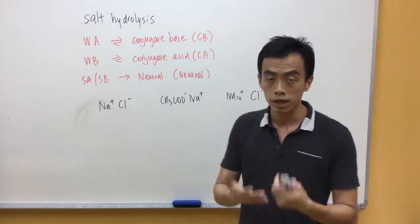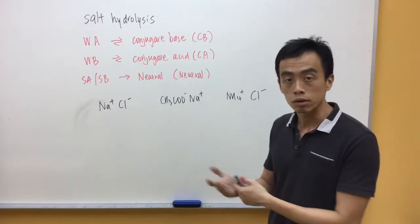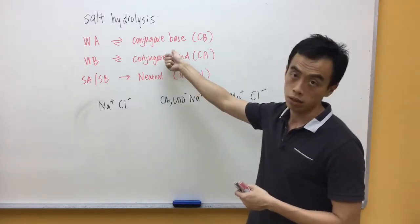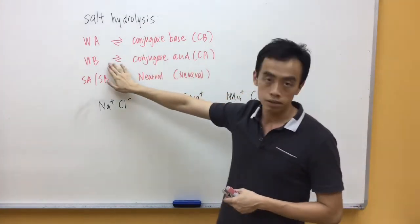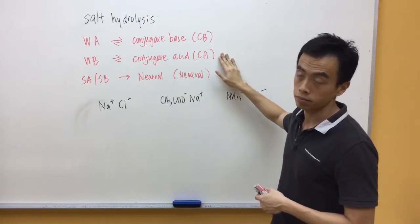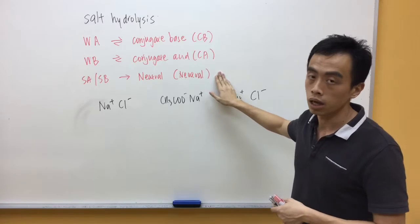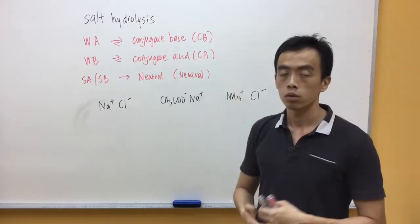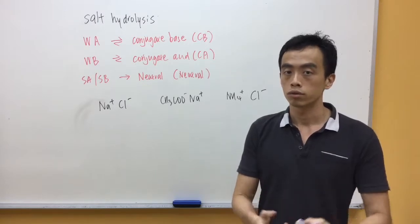We know that for weak acids, when they dissociate in solution, they give us H+ and the counter ion form will be a conjugate base. So, weak acids will give me a conjugate base. Weak base dissociate in solution will give me a conjugate acid. Strong acid, strong bases, when you dissociate in solution, the counter ion forms are neutral. With this idea in mind, we can use it to deduce the nature of salts.